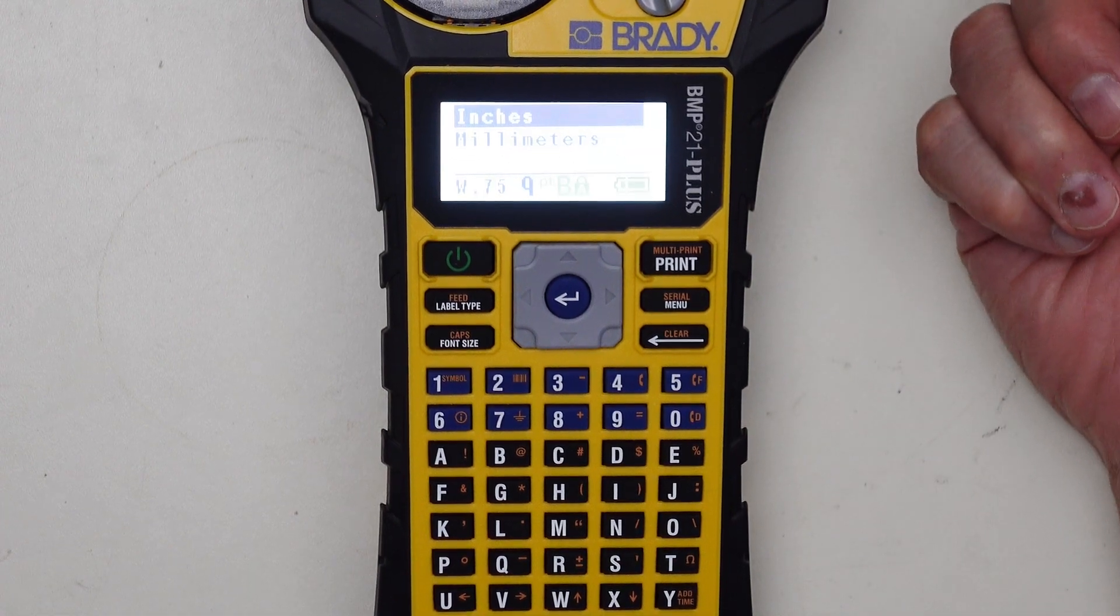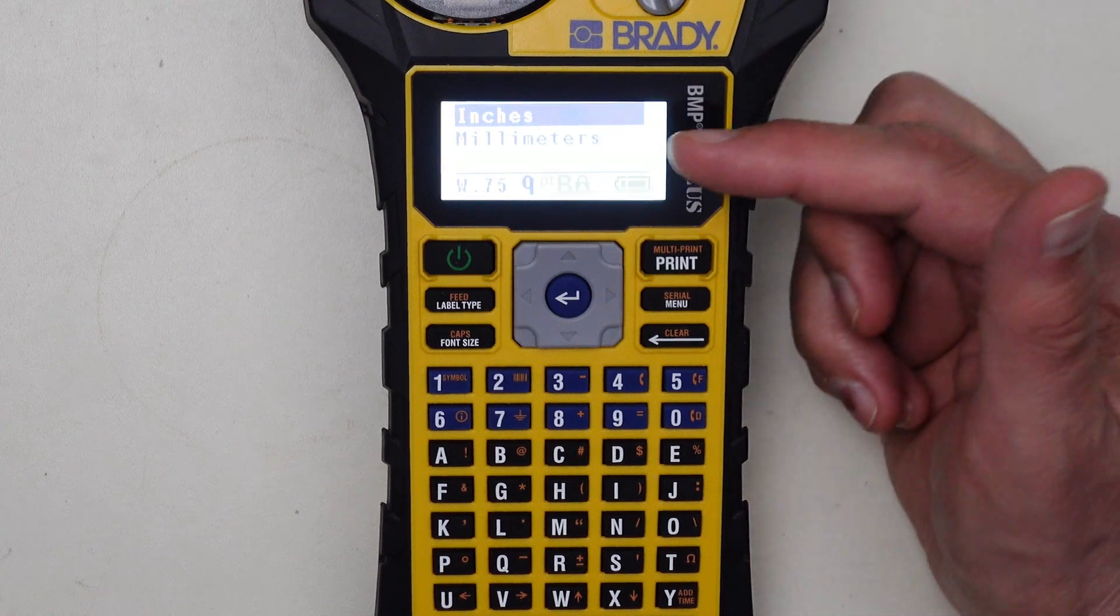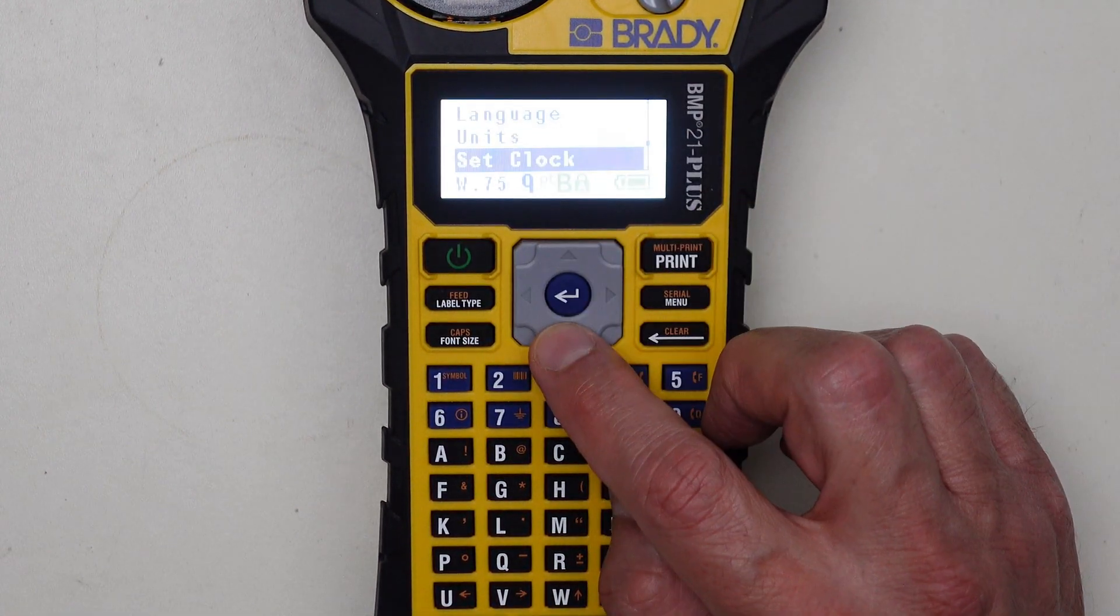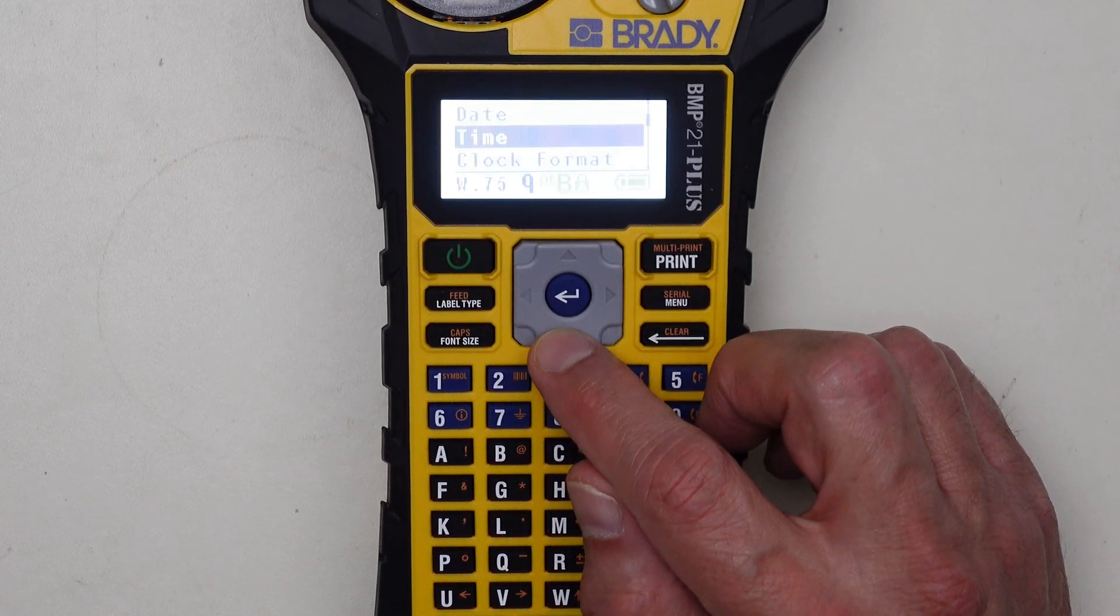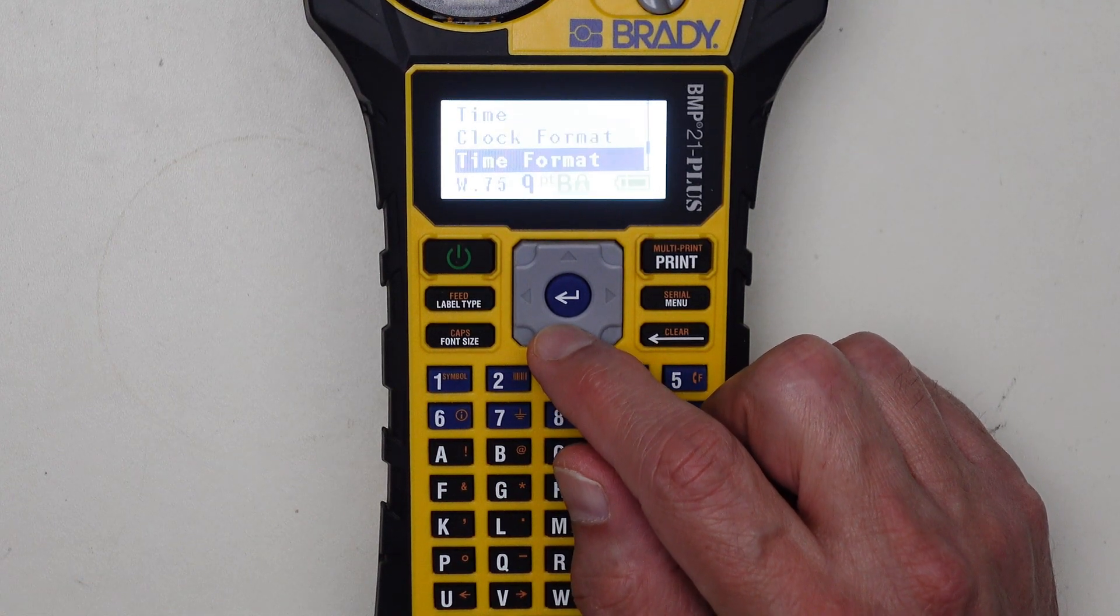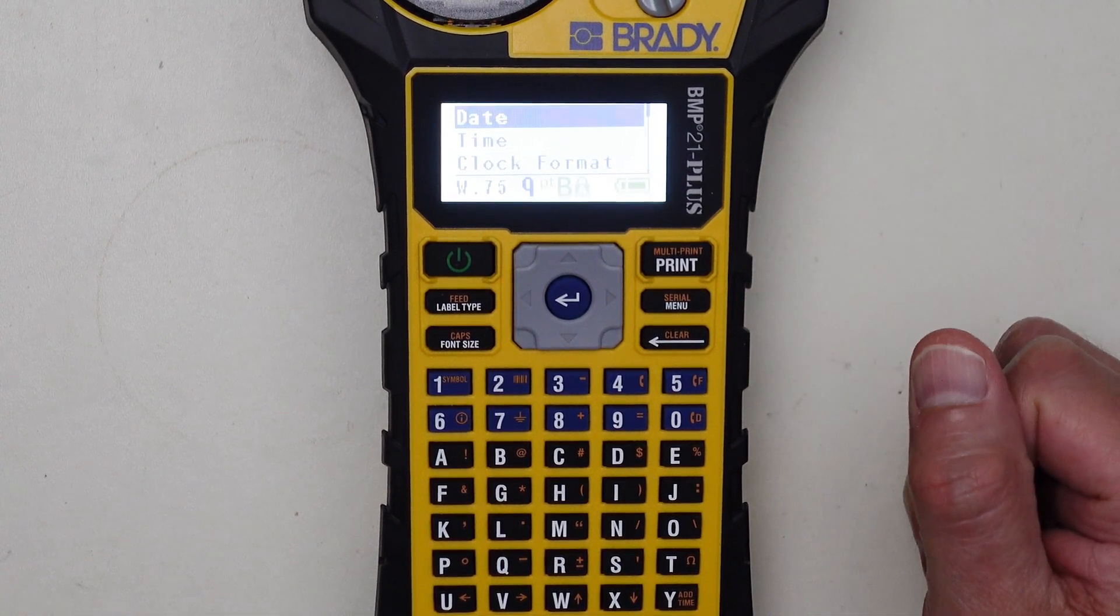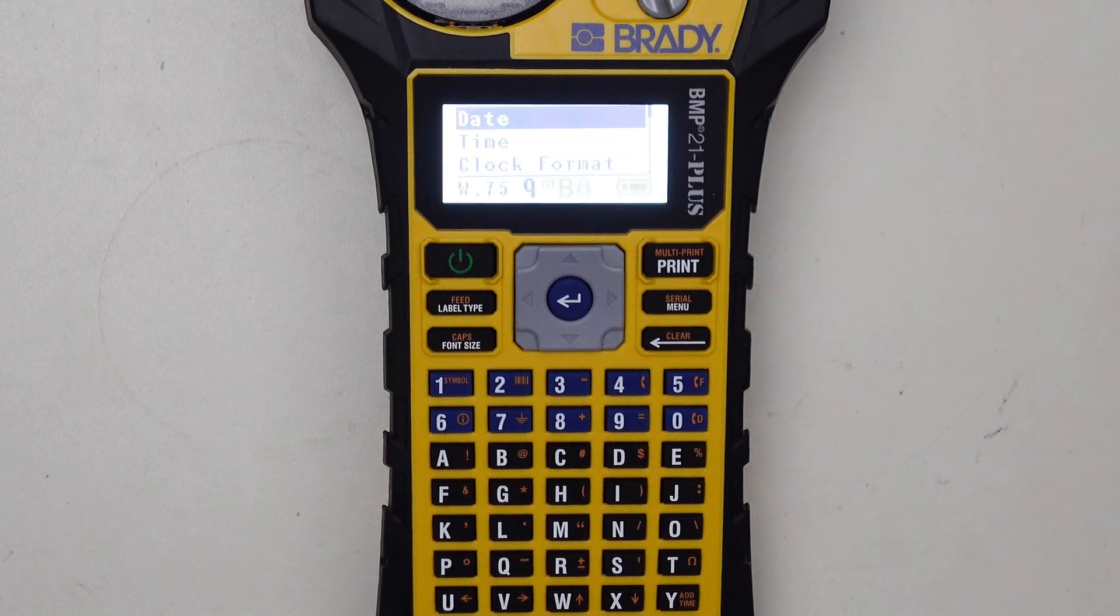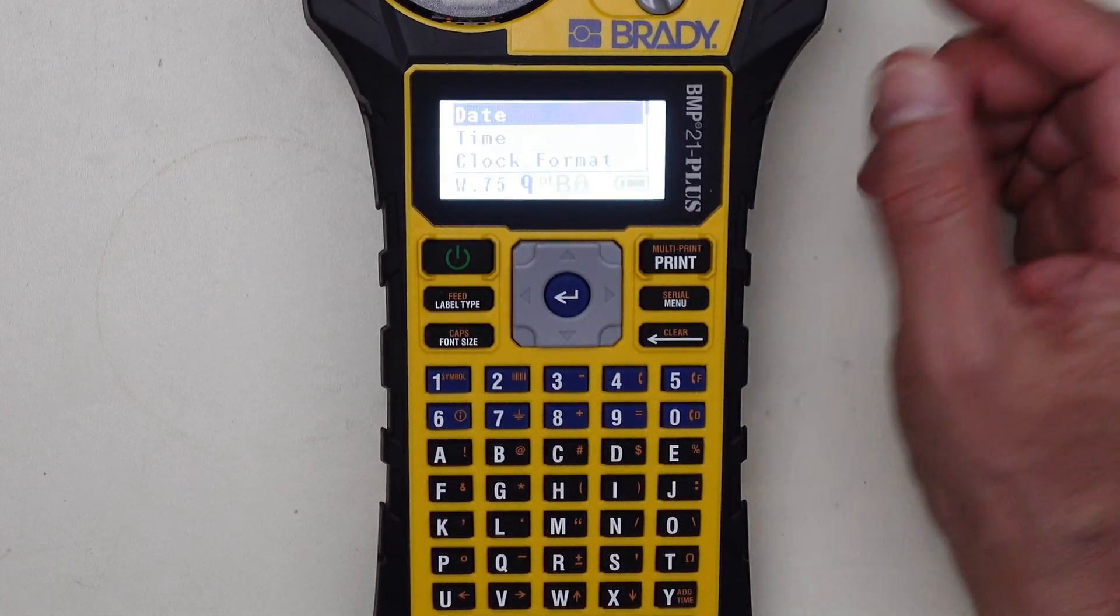And I would set the clock. So the setting of the clock would be things like the date, the time, the clock format, how you want the time displayed, the time format, date format. And that's important if you decide that you ever want to make labels which is one of the options to put the date and time on the label itself. You obviously want to have that accurate.